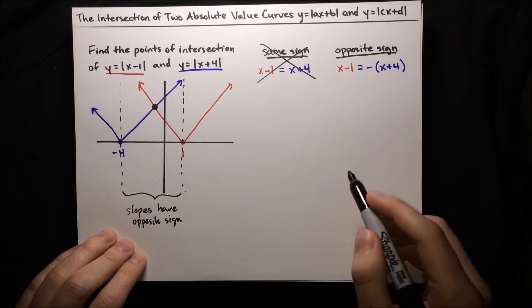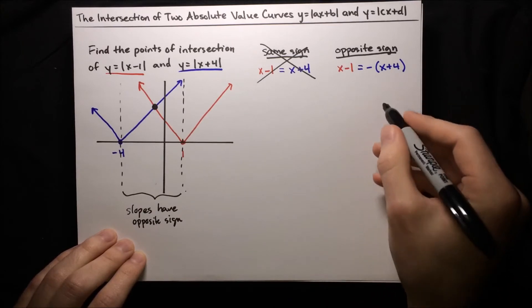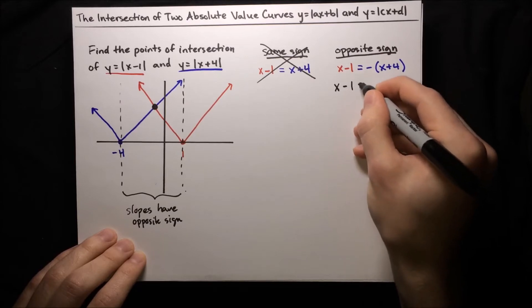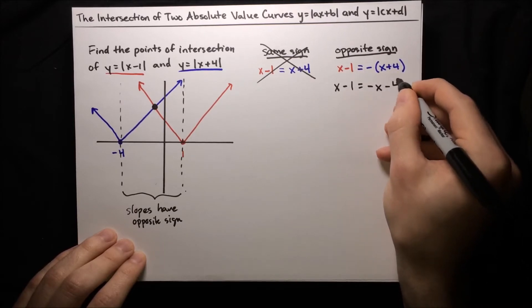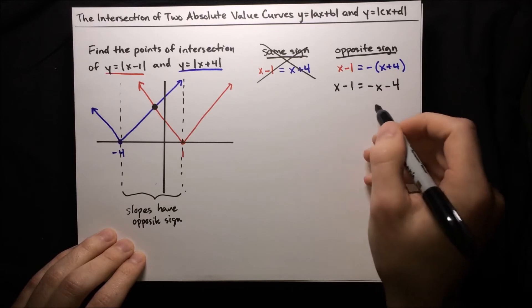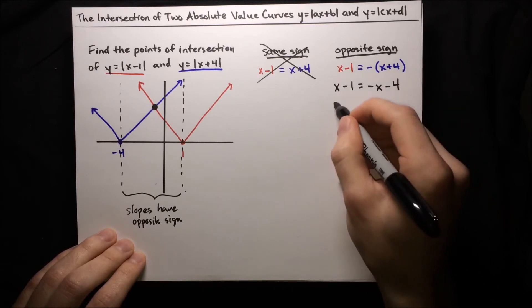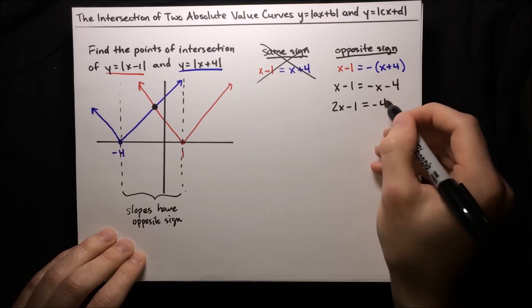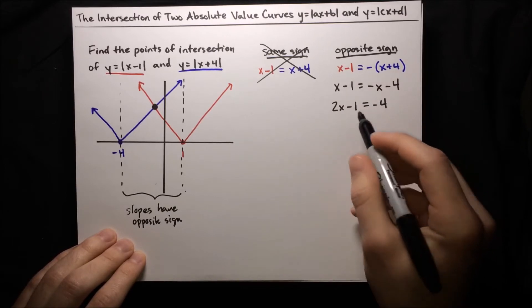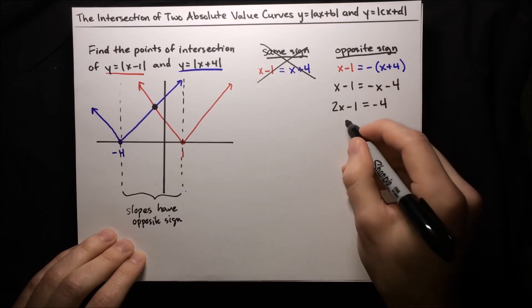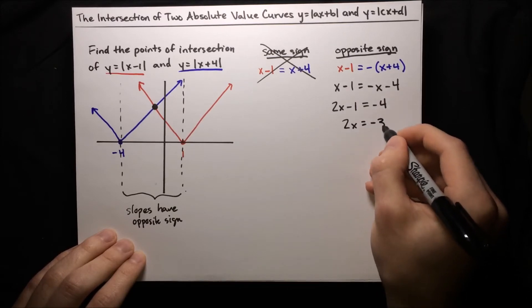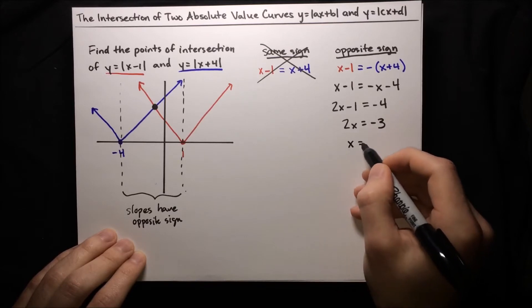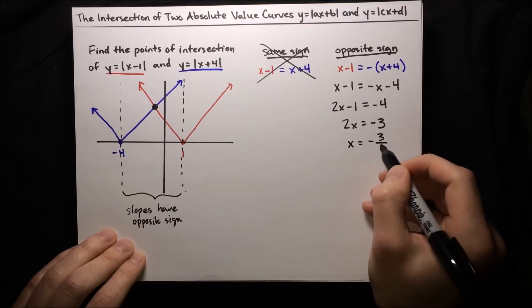So let's go ahead and solve it. We'll distribute the negative sign and get x minus 1 equals negative x minus 4. Then we'll add x to both sides to get 2x minus 1 equals negative 4. Then we'll add 1 to both sides to get 2x equals negative 3. Lastly, we divide by 2 and get x equals negative 3 over 2.